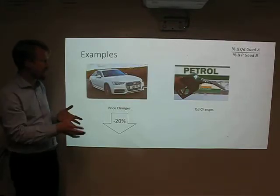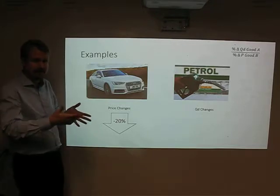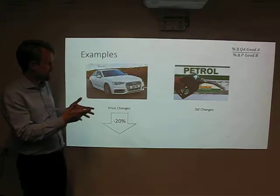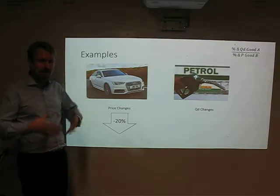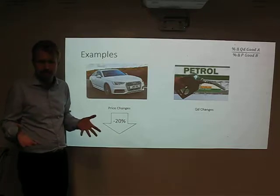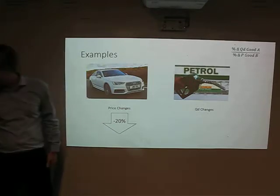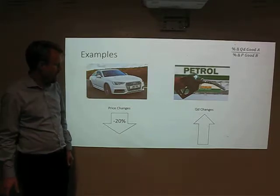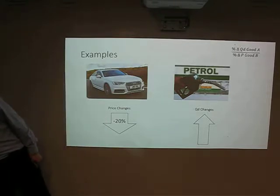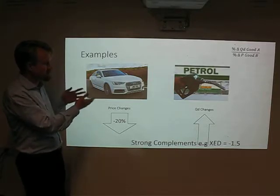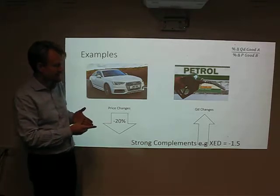Here's actually the first example flipped around. If the price of cars goes down by 20%, what happens to the demand for petrol? I think this is a bit different from before, where we said they were probably weak complements. If the price of cars goes down by 20%, more people are going to buy cars, and everybody who buys a car is going to be using petrol. So all of those new purchases are going to increase demand for petrol — by a more than proportional increase. Therefore, we would say they are strong complements with an XED of about 1.5.